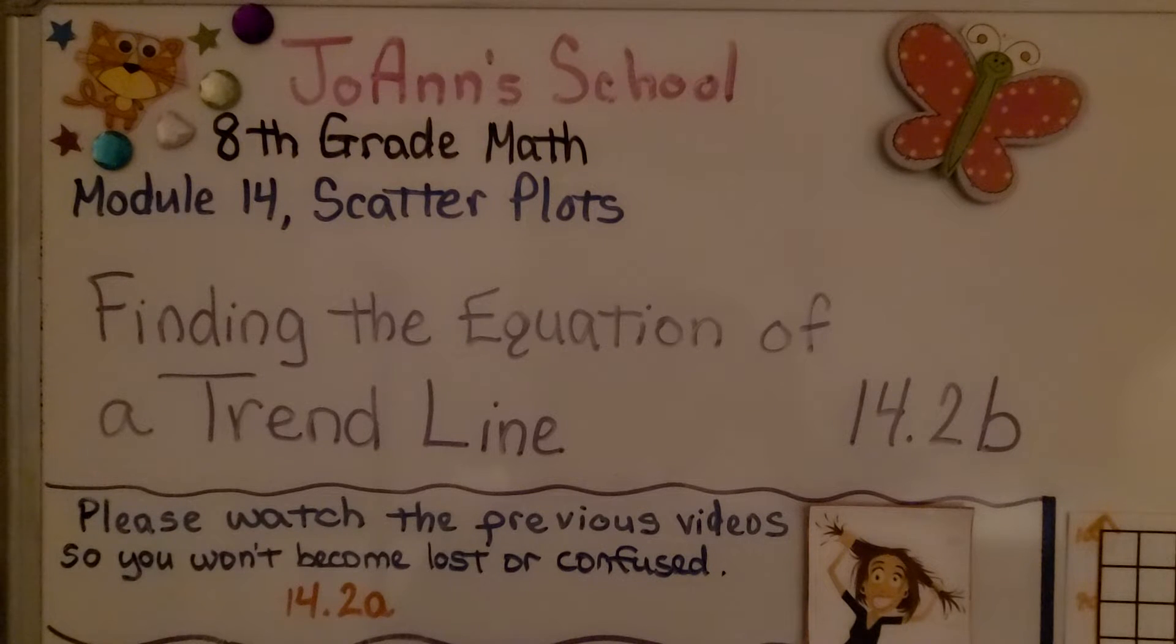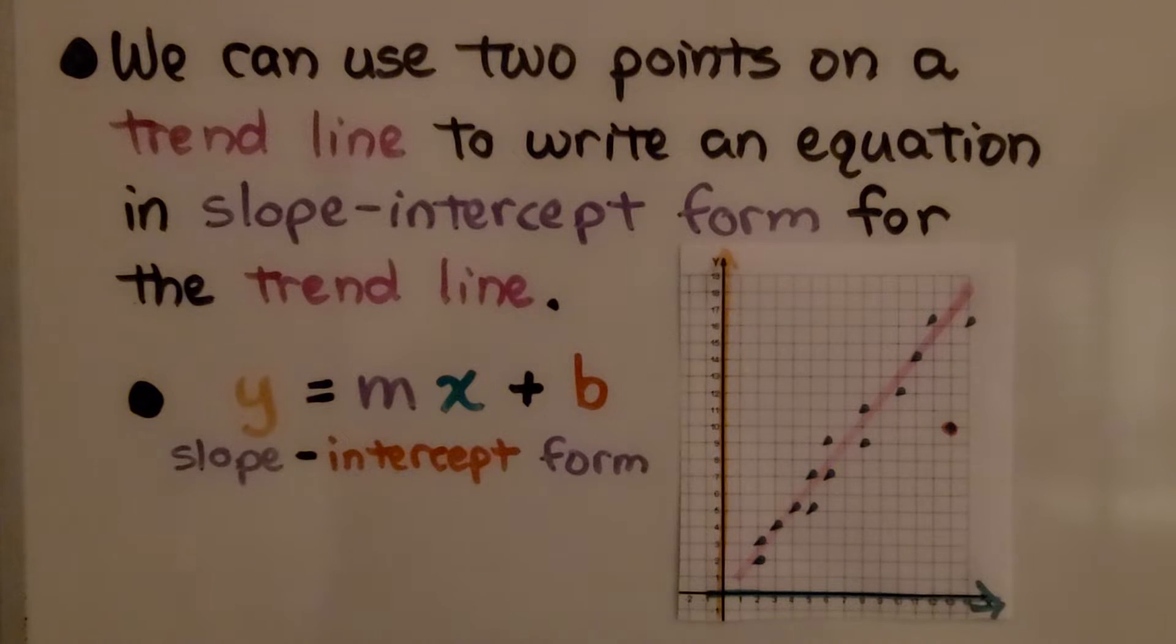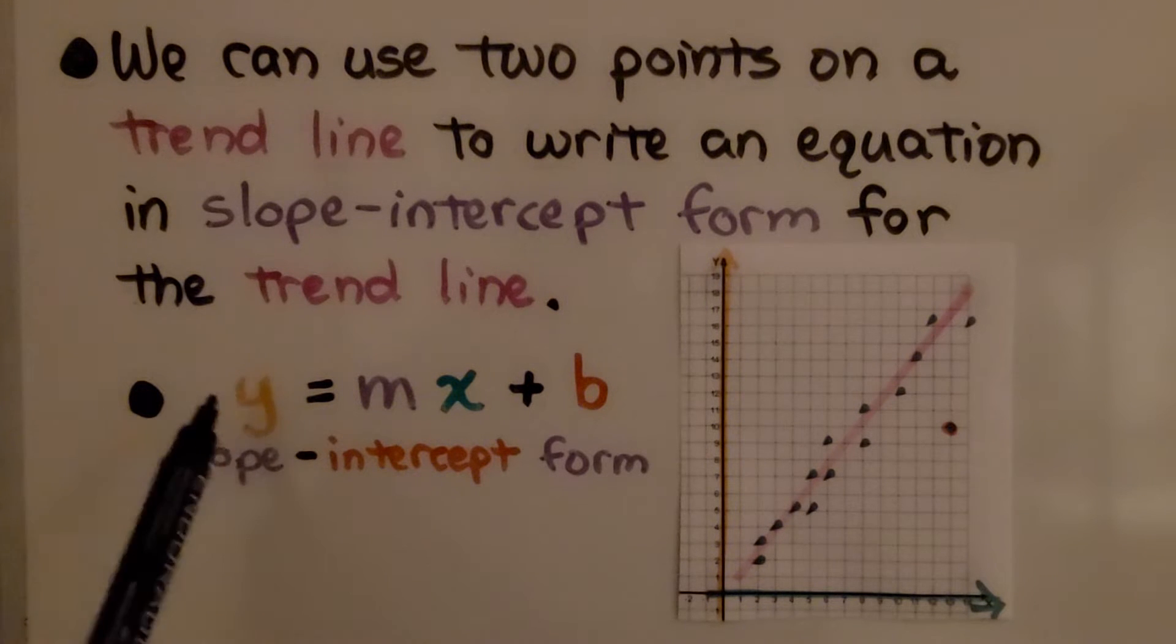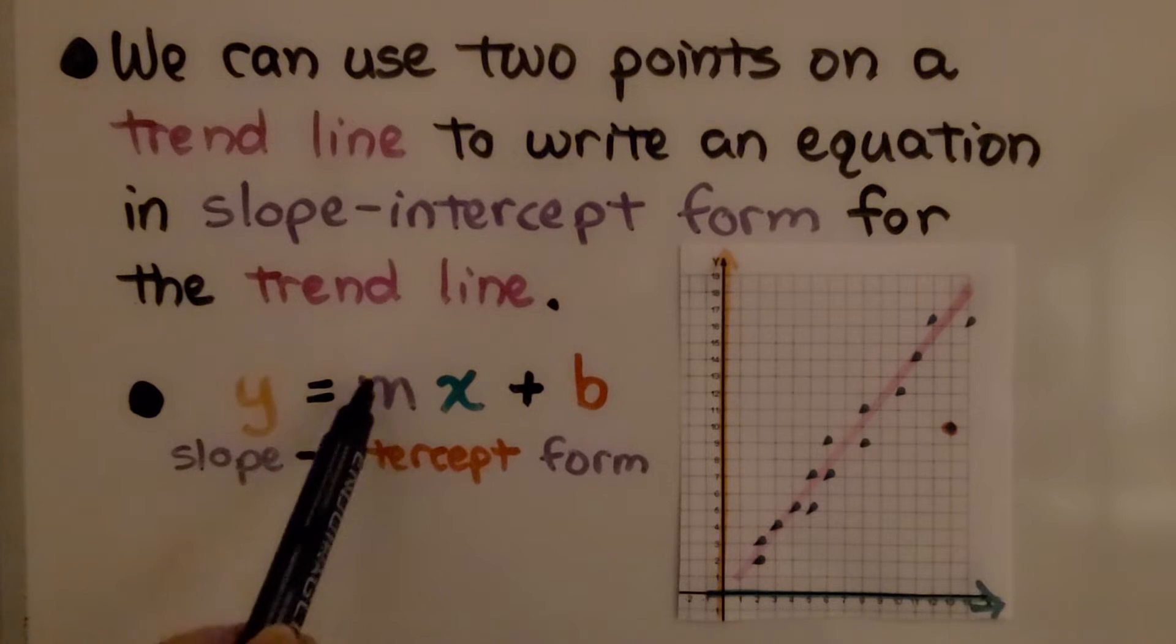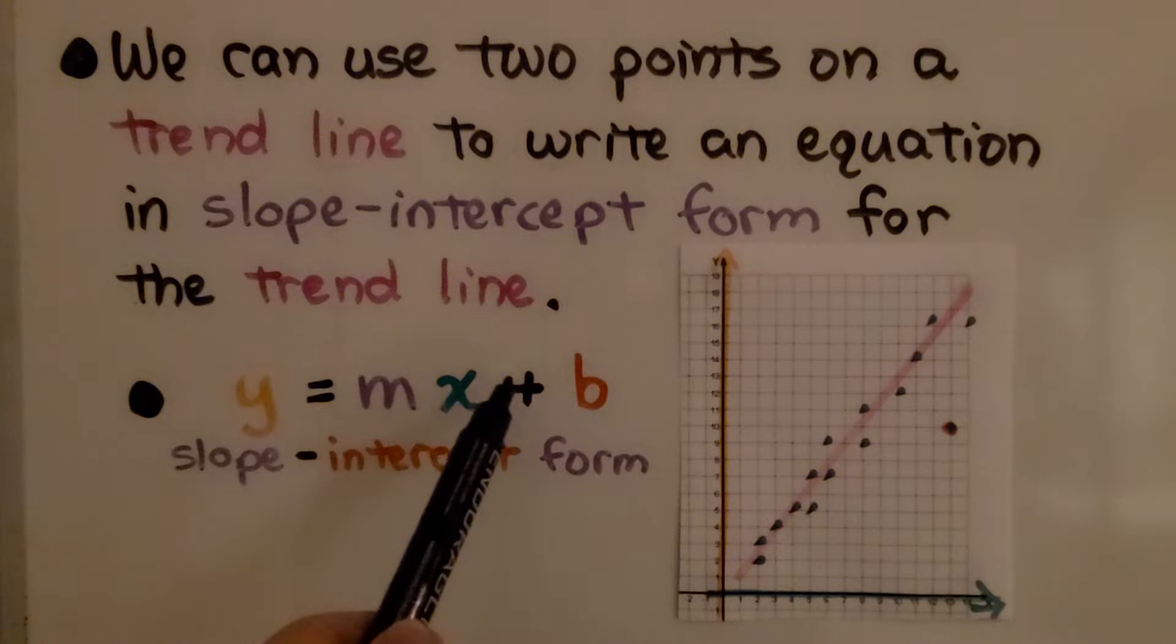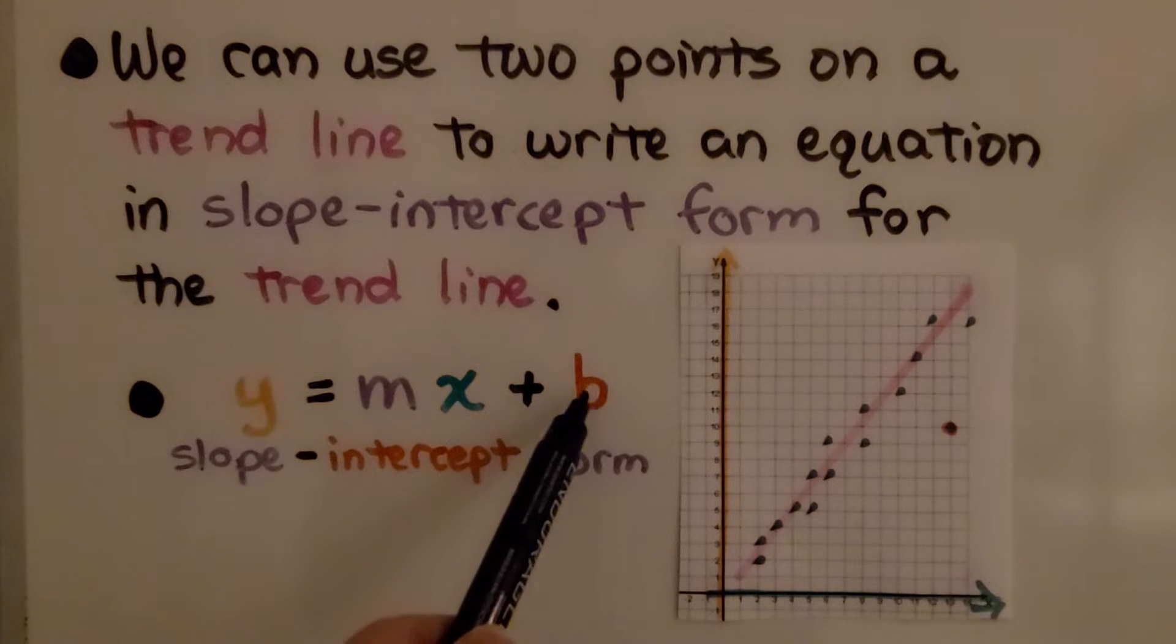Finding the equation of a trendline, lesson 14.2b. We can use two points on a trendline to write an equation in slope-intercept form for the trendline. So this is slope-intercept form if you remember. We have our y value and it's equal to the slope multiplied by the x value plus the y-intercept b.